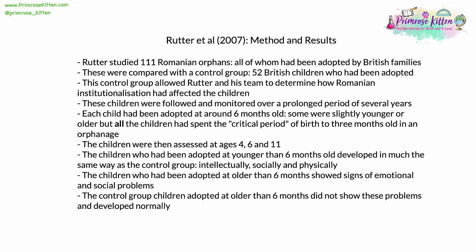Following the opening up of Romania in the 1990s, many psychologists conducted research in these orphanages. One example of these Romanian orphanage studies was done in 2007 by a group of researchers led by Rutter. Rutter studied 111 Romanian orphans who had all been adopted since 1991 by British families. They were compared with a control group of 52 British children who had also been adopted, to determine a baseline. The object was to determine how Romanian institutionalisation had affected the children. Each of the children had been adopted at around six months old, but critically had all spent the critical period of birth to three years in an orphanage.